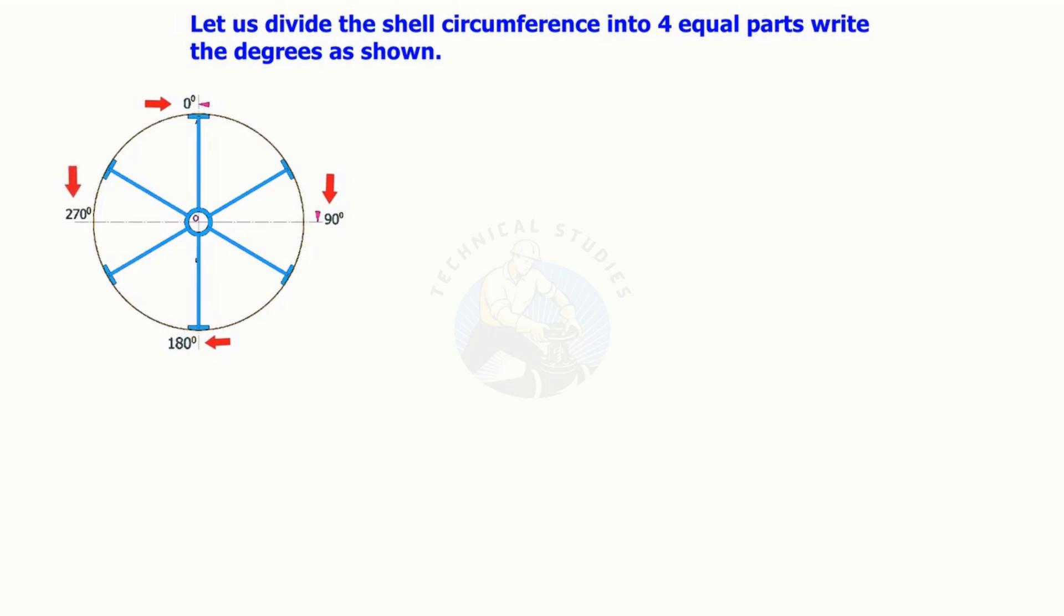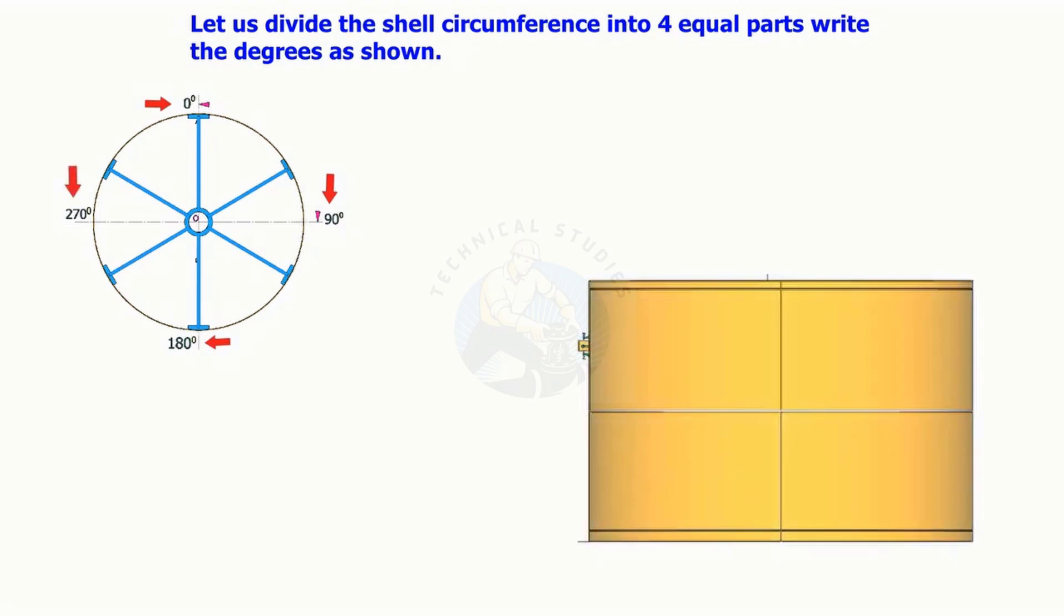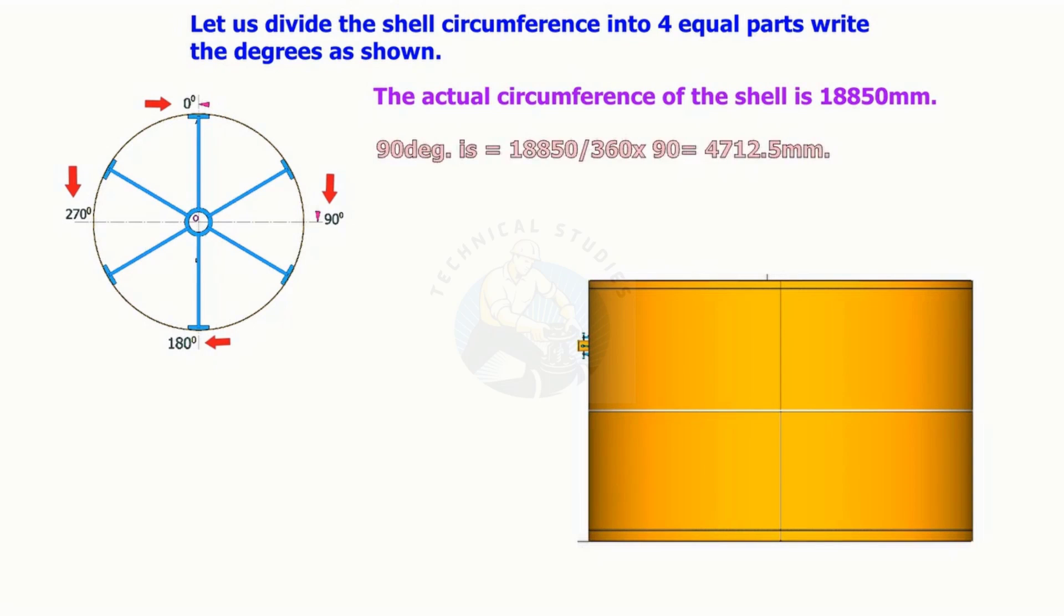Actual circumference of the shell is 18,850 millimeters. 90 degrees is equal to 18,850 divided by 360 times 90, equals 4,712.5 millimeters.